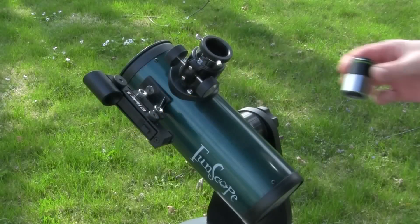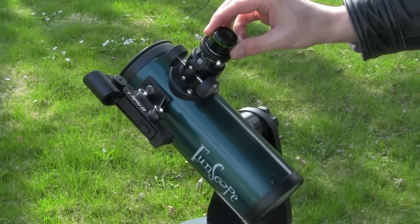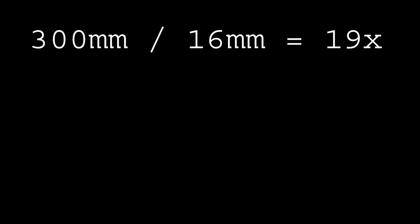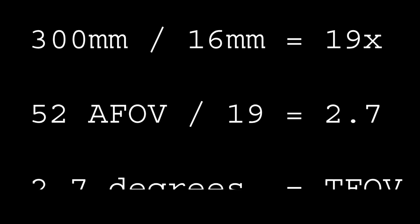On the flip side, this 300mm focal length telescope using a 16mm plössl eyepiece yields a magnification of 19 times. Since the apparent field of view is 52 degrees, we divide that by 19 and get a 2.7-degree telescopic field of view — a nice wide field of view, large enough to see the entire Pleiades star cluster, or even the belt stars of Orion, though barely.